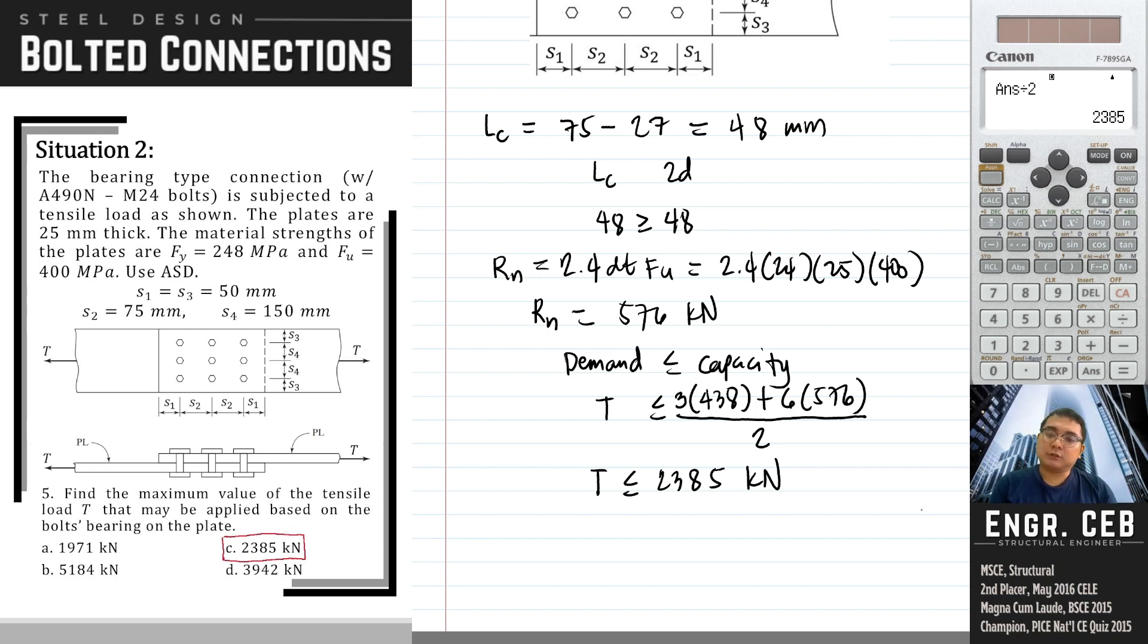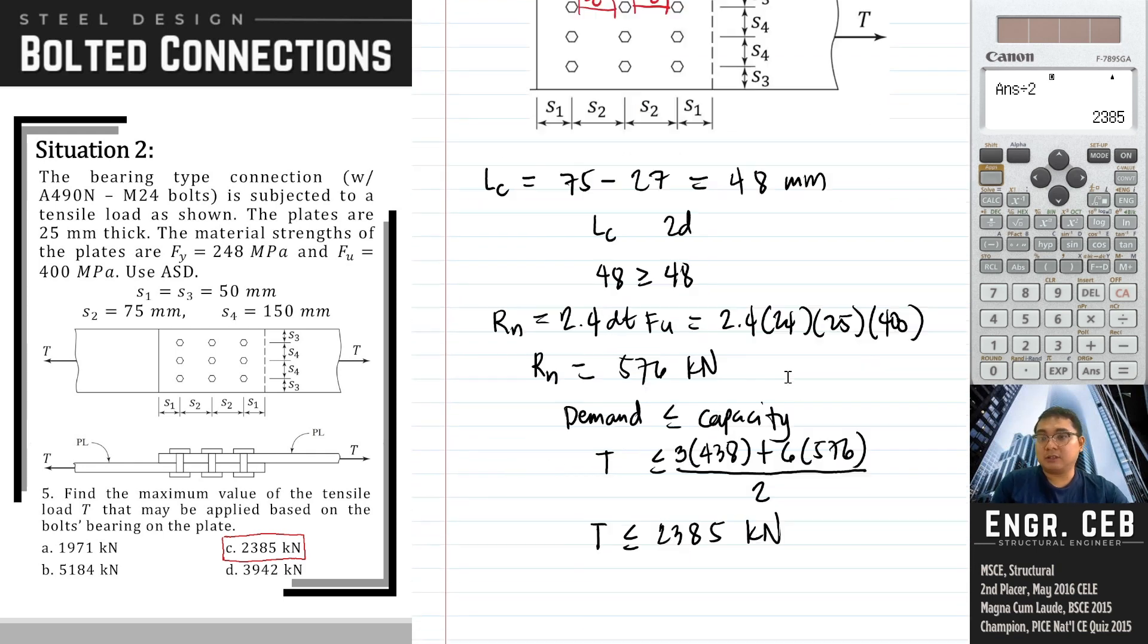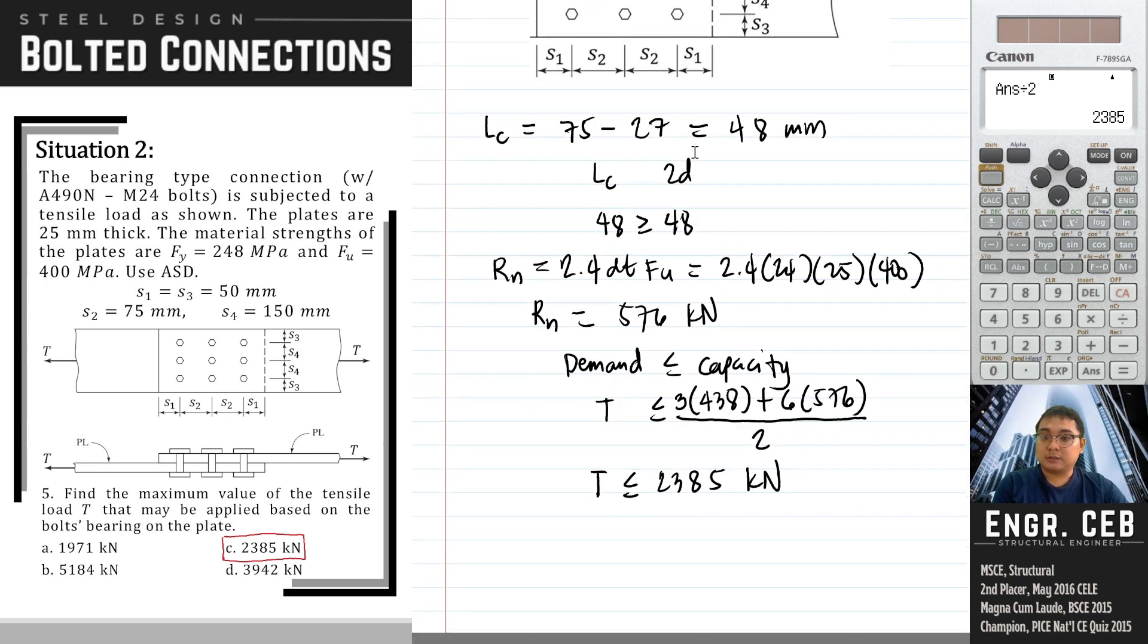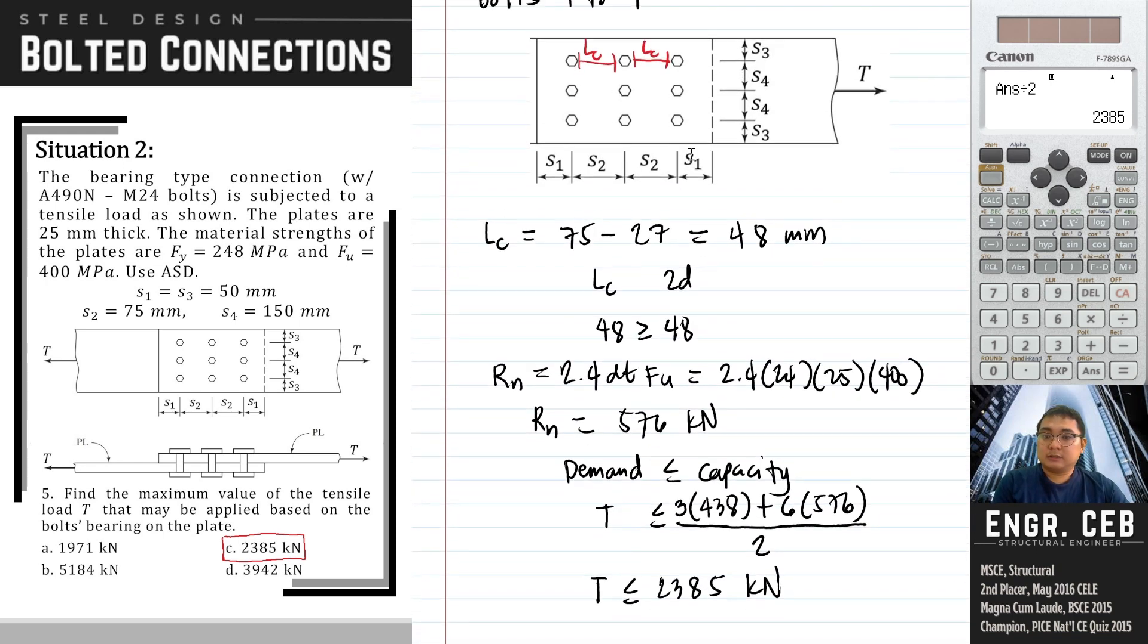By the way, some authors like McCormack simplified the calculation of bearing strength for the bolts. As you can notice based on this calculation, the strength of bolts 1, 2, and 3 is different from the strength of bolts 4 to 9. But when computing the reaction of the bolts, the applied tensile load is simply distributed in all the bolts, meaning the reaction in each bolt should be equal.